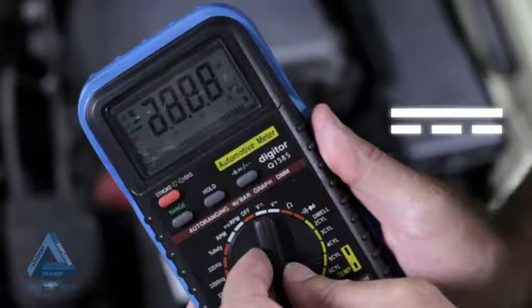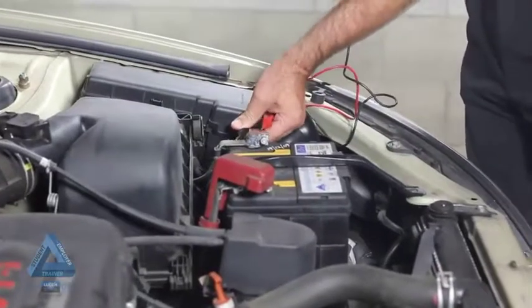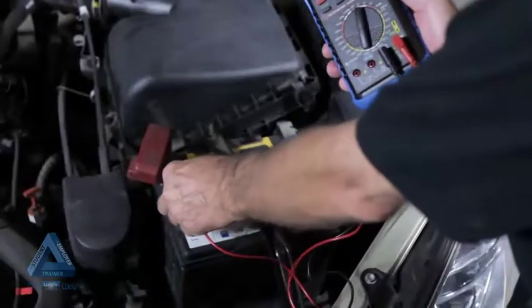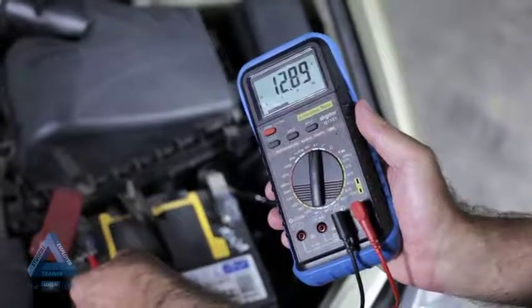To measure voltage, we need to turn the dial on the multimeter to V. We then touch the red probe to the positive terminal and the black probe to the negative terminal. We should immediately get a reading of how many volts the battery is producing.